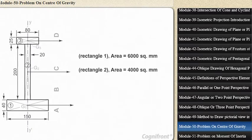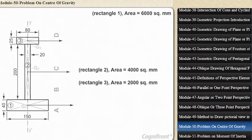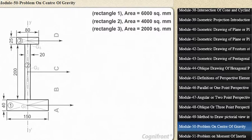Calculate the areas of the rectangles 1, 2, and 3. They will be 6000, 4000, and 2000 square millimeters respectively.